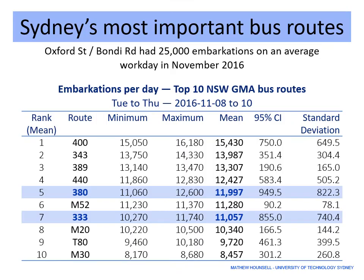On an average pre-COVID workday, Sydney's trains had 1.2 million tap-ons while its buses had 0.9 million tap-ons. The buses had at least two in every five passengers, making the city's humble buses essential to support the social and economic functions of Sydney.